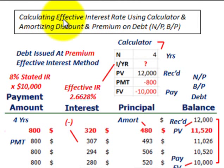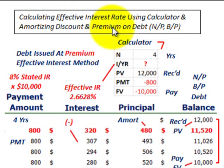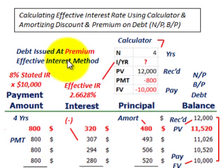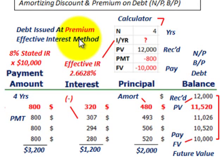What we're going to be looking at here is calculating the effective interest rate using a financial calculator and amortizing any discount or premium on some debt that we're going to be issuing. We could look at it in terms of a notes payable, a bonds payable, or a loan. So let's look at what we're talking about when we're setting up this effective interest amortizing of some debt.